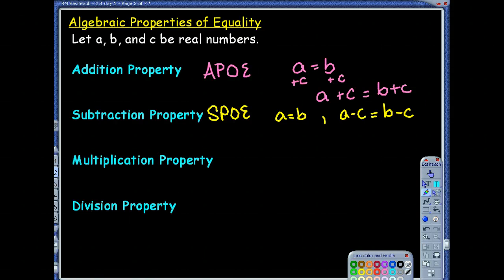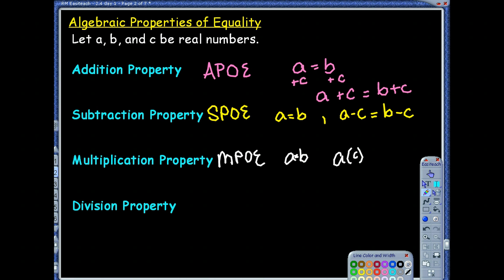The multiplication property of equality says if I multiply something to one side, I'm multiplying it to the other. These should sound pretty much the same, just changing the operation. MPO — multiplication property of equality. So if A equals B, then A times C would equal B times C. As long as I do the exact same thing to both sides, I'm keeping it equivalent. And the last one, the division property of equality — if I divide something from one side, I would have to divide it from the other side as well. That's DPO — like Home Depot.